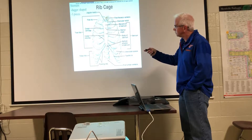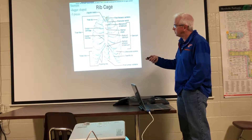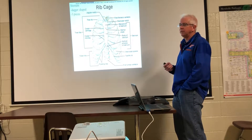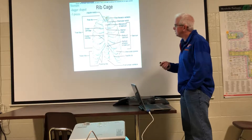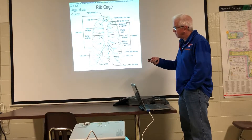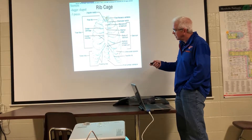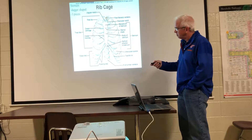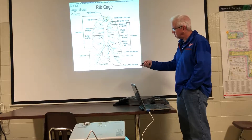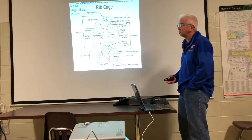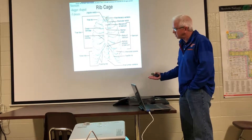The first seven ribs are true, meaning they have a direct costal cartilage attachment to the sternum. These first seven ribs have a piece of hyaline cartilage that is the union between the rib and the sternum. The next five ribs, 8 through 12, are called the false ribs. The first three of which — 8, 9, and 10 — do have an attachment to the sternum, but their attachments are to the costal cartilages above them. So 8, 9, and 10 are considered false ribs because they don't attach directly to the bone.